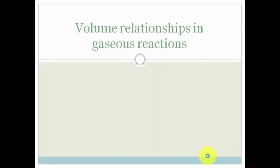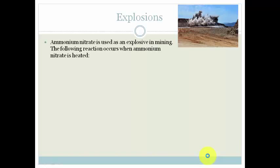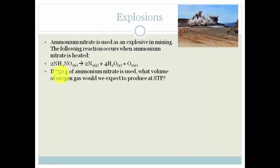So let's do an example. We have explosions. On the right here you can see that there is a big explosion occurring, and what that is is ammonium nitrate, which is being used in some surface mining. The following reaction occurs when ammonium nitrate is heated. You've got ammonium nitrate forms nitrogen, water and oxygen. Now it says, if 750 grams of ammonium nitrate is used, what volume of oxygen gas would we expect to produce at STP?